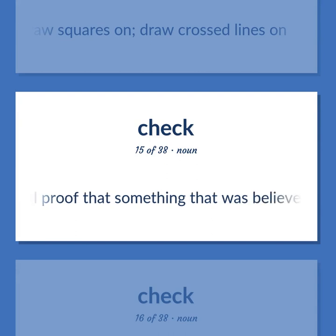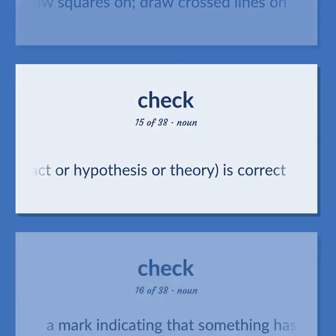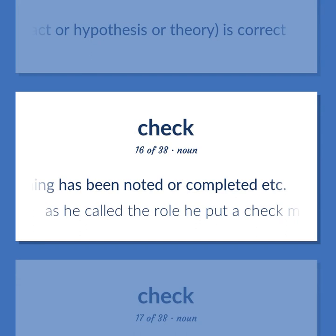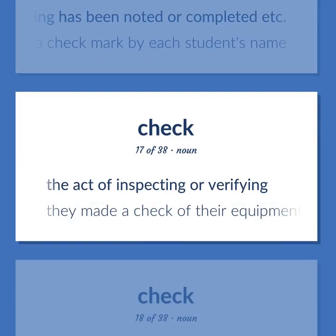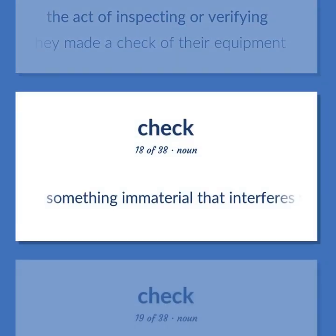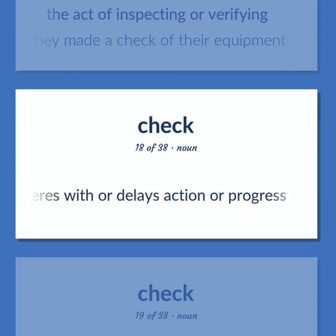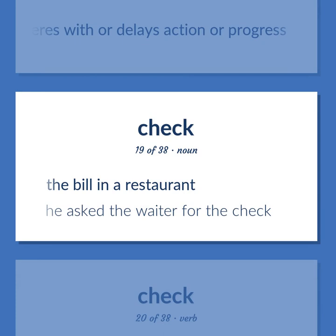Check: additional proof that something — some fact, hypothesis, or theory — is correct. A mark indicating that something has been noted or completed. 'As he called the role he put a check mark by each student's name.' The act of inspecting or verifying — 'They made a check of their equipment.' Something immaterial that interferes with or delays action or progress. The bill in a restaurant — 'He asked the waiter for the check.'